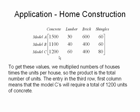If we look at the entry in the third row, first column, that 1200 tells me that all of the Model C's will take a total of 1200 units of concrete. If I go to another entry, for instance the first row fourth column, that means a total of 60 units of shingles will be needed on all the different Model A's.